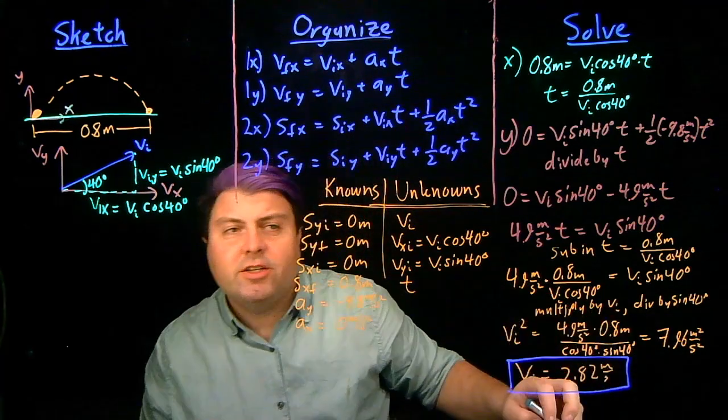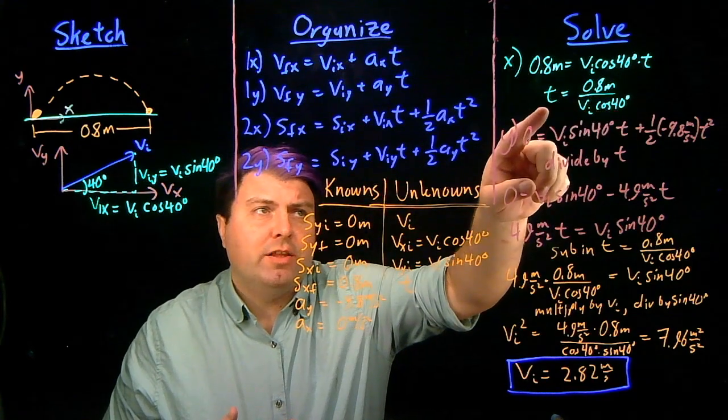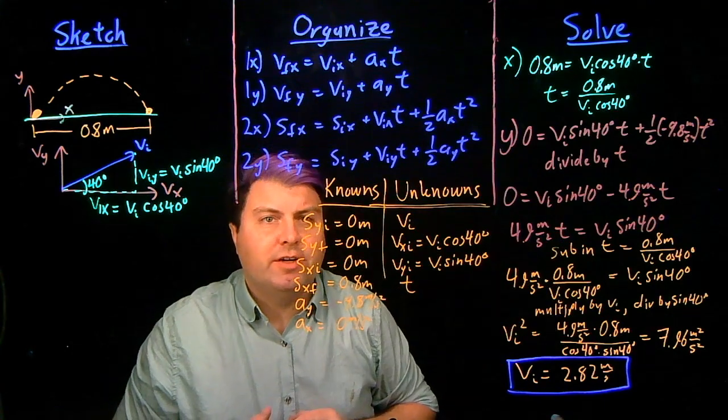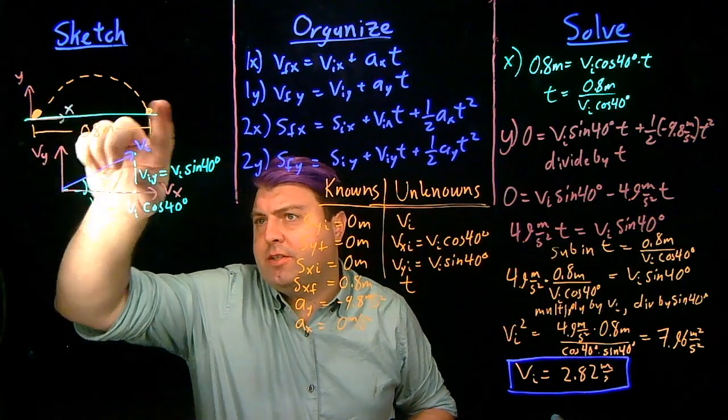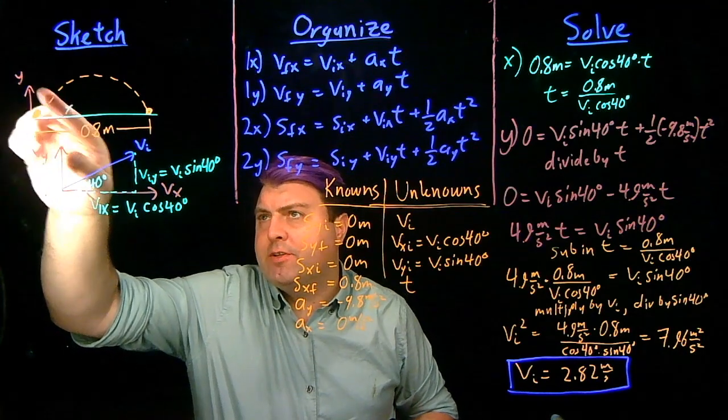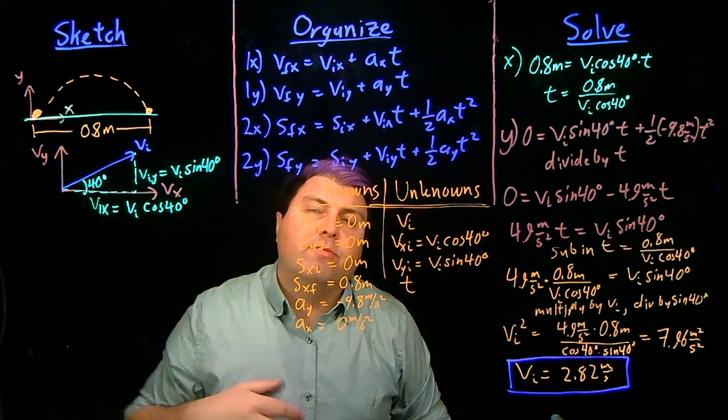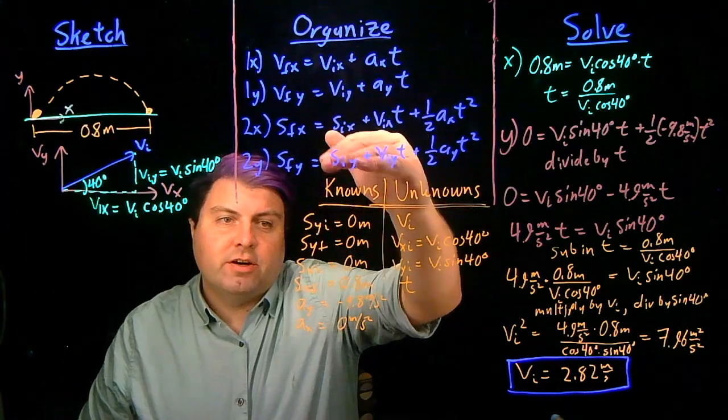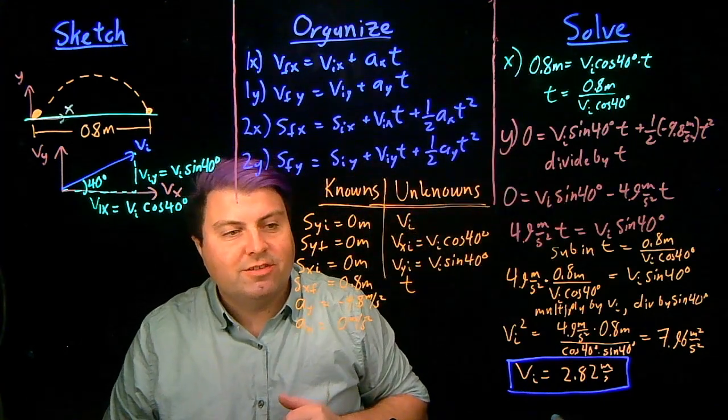So this is an interesting problem because we don't have any one equation, one unknown. We have to symbolically solve for t in terms of vi, and then substitute it in. But other than that, the big things are to have our sketches, and to make sure that our y versus x sketch and our vy versus vx sketch are separate sketches so we can get all the information from each of them, and then just use our equations, use our knowns and unknowns, and do that one substitution. Thanks.